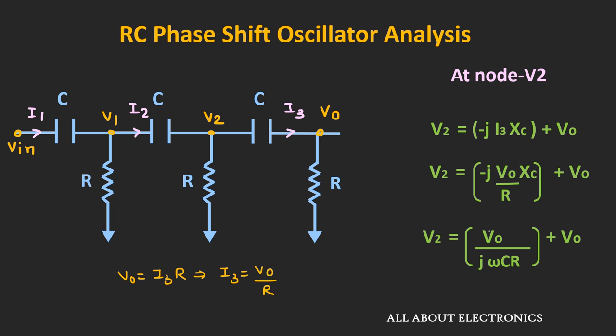Now let's find the gain at this particular frequency. Once the imaginary part is zero, the expression becomes Vin = Vo·(1 − 5/(ω²C²R²)). Substituting ω = 1/(√6·RC), we get Vin = Vo·(1 − 30), so Vin = −29·Vo. Therefore Vout/Vin = −1/29. This confirms the RC network provides an attenuation of 1/29, and the negative sign indicates a 180 degree phase shift.